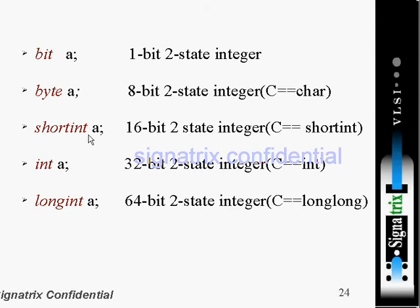Third one is short int, that is sixteen bit. Int is thirty-two bit and long int is sixty-four bit. So all are varying in terms of width, right? And one more thing is here, all are two state, two state integers.